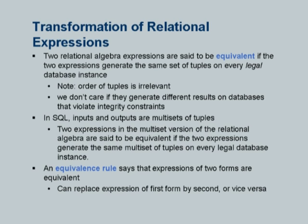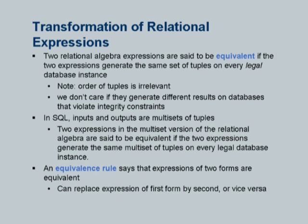The first step is how do you generate equivalent expressions? Two relational algebra expressions are said to be equivalent if the two relations generate the same set of tuples on every legal database instance — one which satisfies all the integrity constraints specified on the database. You can have two expressions which may return different results if a primary key constraint is violated, but we do not care. Also, what do we mean by same result? The order in which tuples are output is irrelevant — if you need order there is an ORDER BY clause which will enforce it. So we treat expressions as equivalent without caring about any ordering of the result.